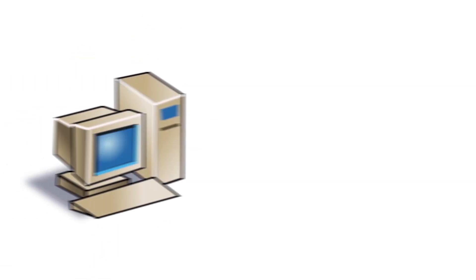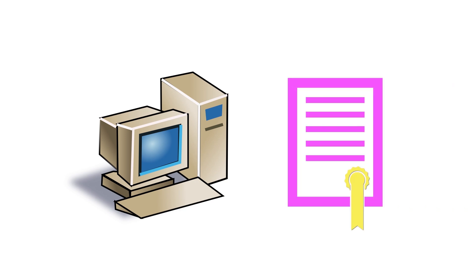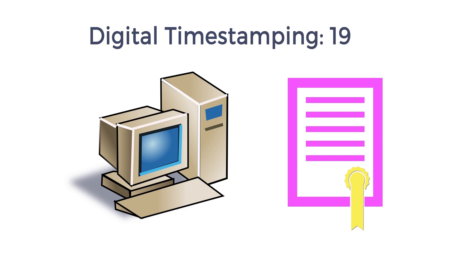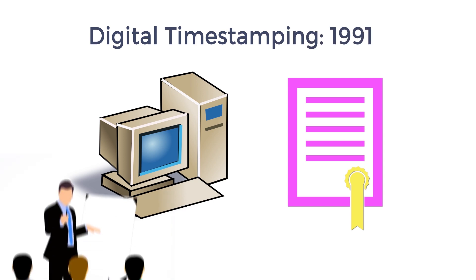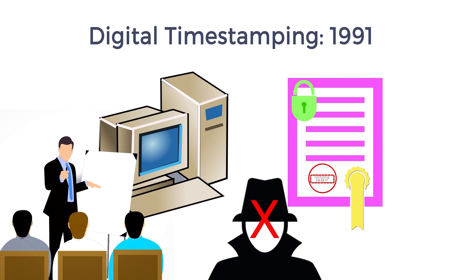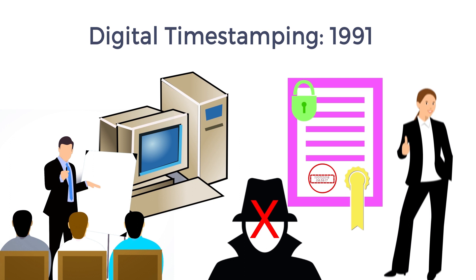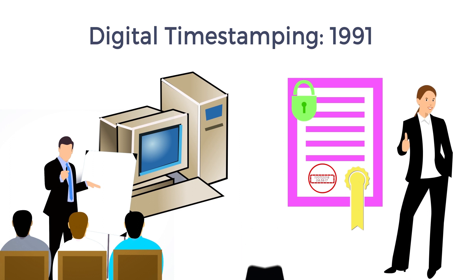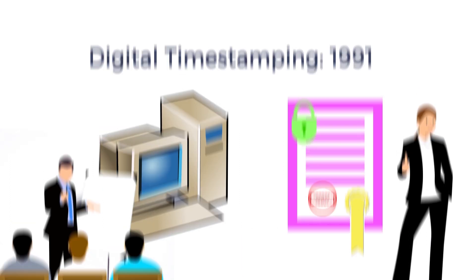Then came computers. Timestamping is used as well for digital files. It was created in 1991 by a group of researchers, with a goal to protect files with a timestamp so they could not be backdated or tampered with. This digital timestamp can protect the owners just like the original paper timestamp could.